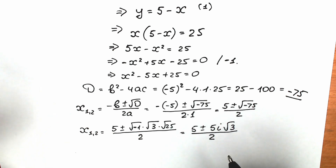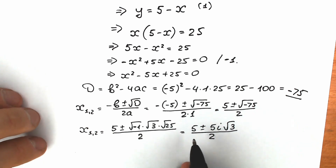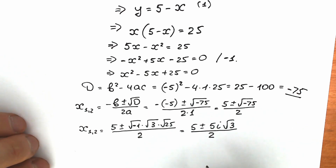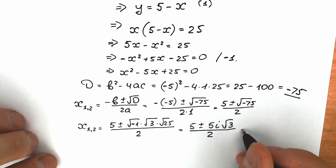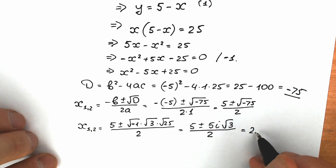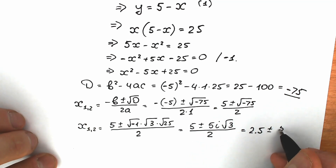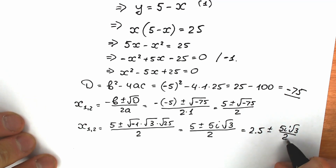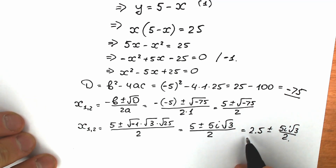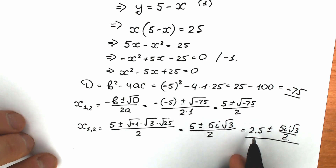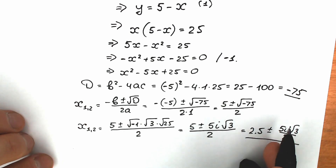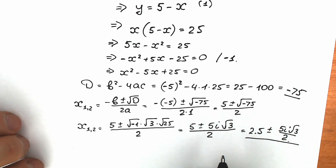For an easier solution, let's divide 5 by 2 to get a decimal expression. So as a result x₁ and x₂ equal to 2.5 plus or minus 5i√3 over 2. This is our x first and second — 2.5 is the real part, and 5i√3/2 is the imaginary part.